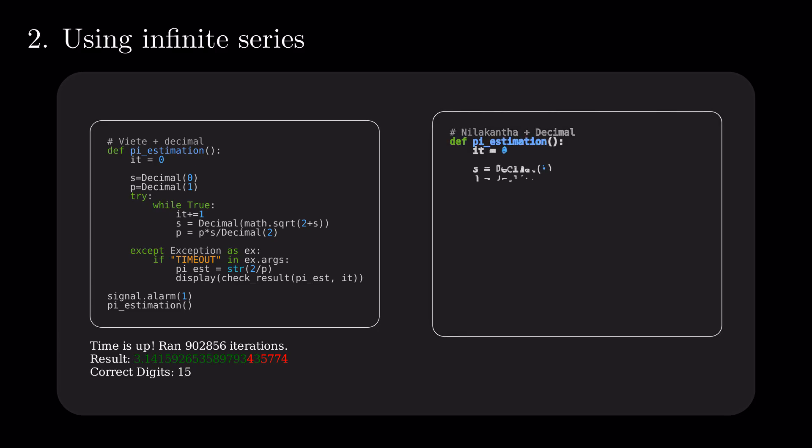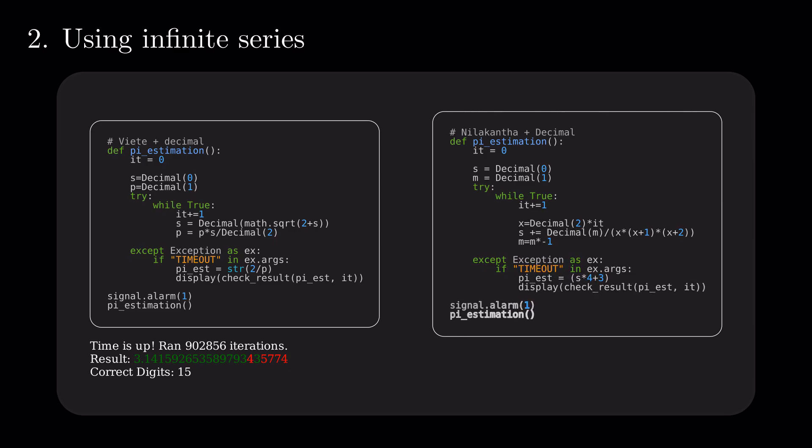Given that the use of decimal provided a low effort, no cost improvement to our computation, let's test it with another formula. Running a similar number of iterations, we get a slightly better estimate, nailing the missing 16th decimal in the Viet computation.